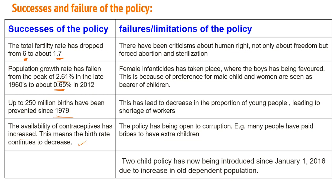The failures and limitations of the policy include criticism about human rights — not only regarding freedom but also forced abortion and sterilization. Female infanticide has taken place where boys have been favored due to a preference for male children. This has led to a decrease in the proportion of young people, leading to a shortage of workers and a large elderly population. The policy has been open to corruption, with many people paying bribes to have extra children. A two-child policy was introduced on January 1st, 2016, due to the increase in the old dependent population.